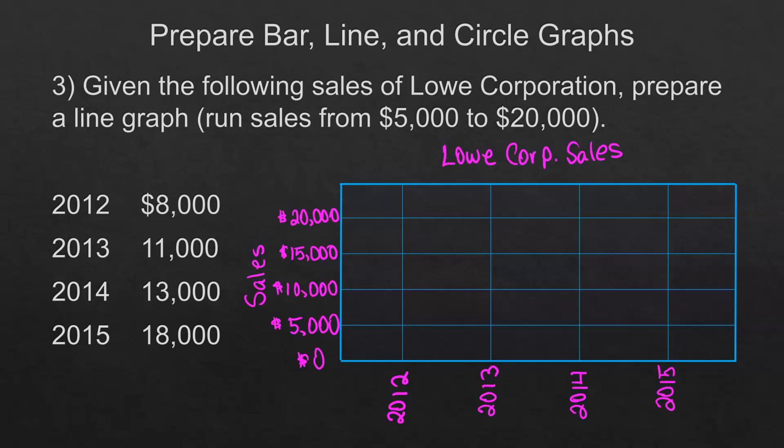I've got this labeled and I based the way I labeled the dollars on the side, the amount of the sales, on my data. My smallest number was 8,000, largest was 18,000, so I went in 5,000 dollar increments up the scale here. I've got the time on the bottom. Labeling is good and putting a title is good whenever you're making a graph.